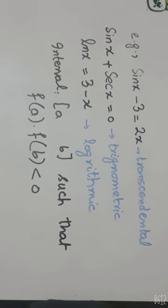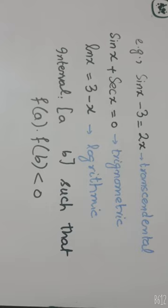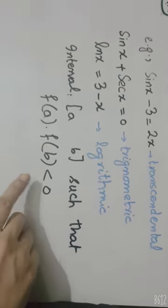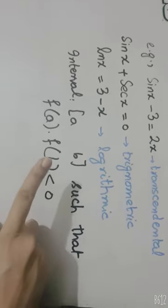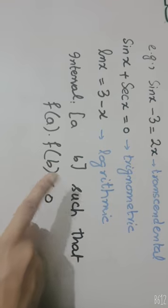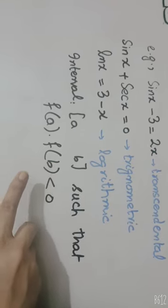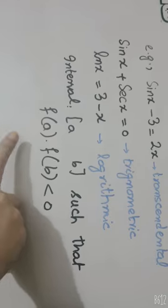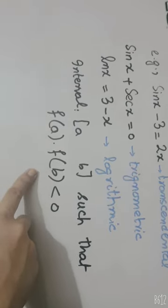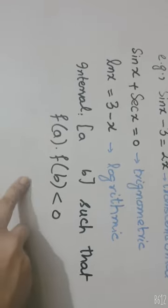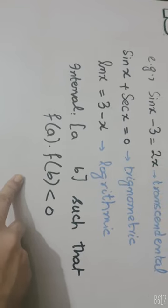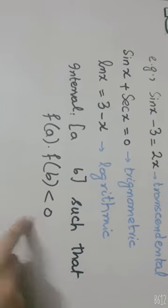We have to find the interval such that a certain condition is satisfied. The two points of the interval, a and b, are chosen so that the value of the function at point a and point b have opposite signs (one positive, one negative), satisfying this condition.